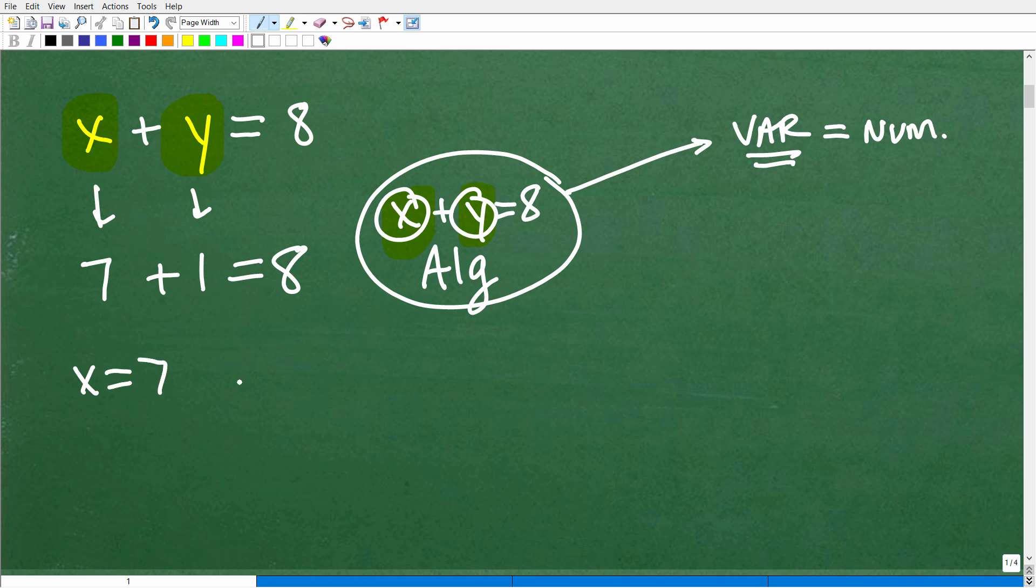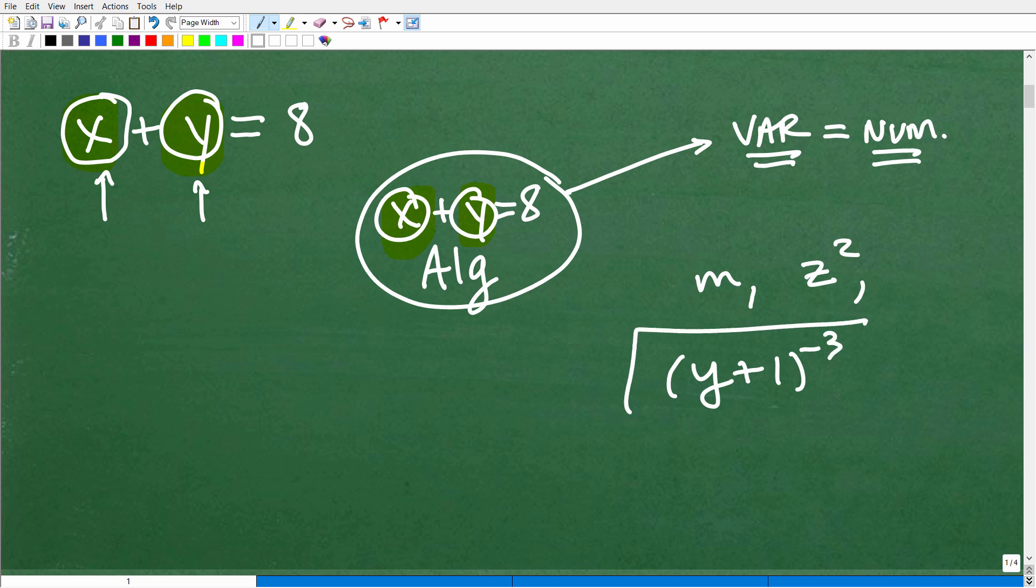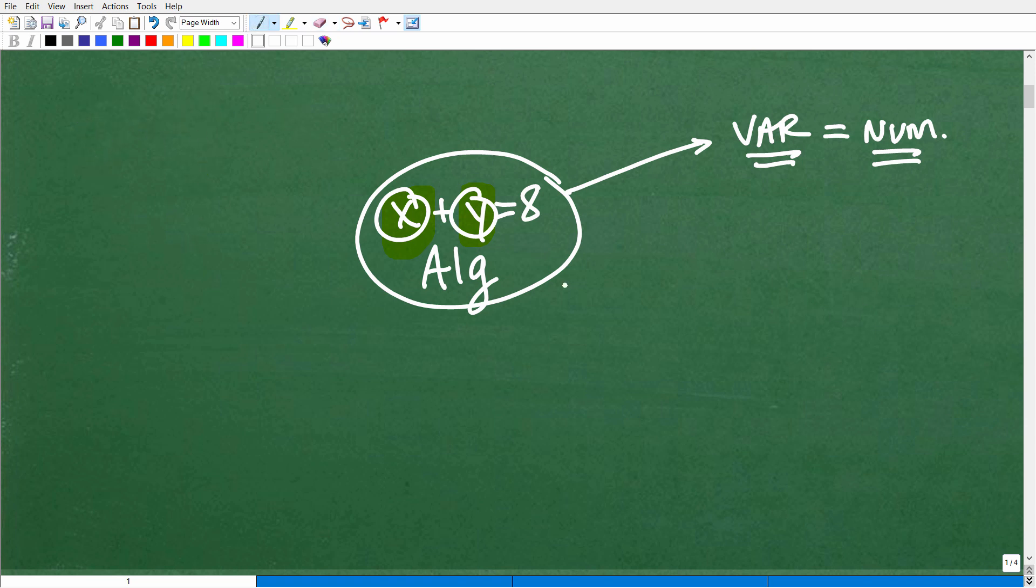But I could switch this around. Maybe this is going to be x is 4, y is 4. That would work as well. But the bottom line, what we're seeing here in algebra is that we have two numbers. A number plus another number is equal to 8. So one of the most basic concepts of algebra is that the variables, all these little symbols that we're using are placeholders for numbers. They represent numbers. So that's the first big concept that I want you to remember when we're studying algebra is that all the things that you see, whether they're m, z squared, y plus 1 to the negative 3 power, all these expressions and stuff represent ultimately some numeric value. Now, with that being said, of course, we don't always plug in a value and evaluate these expressions. But just always keep in mind that variables are numbers. They represent numbers.